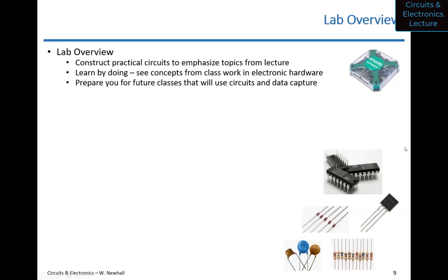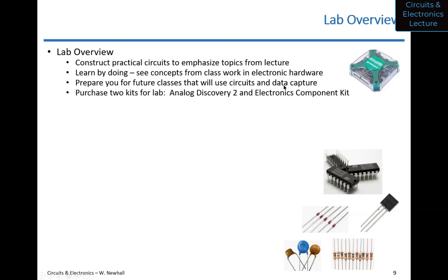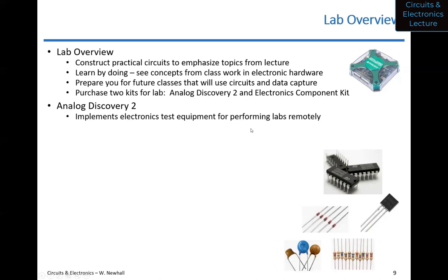For lab equipment at home, you'll purchase two kits from Lab-for-Lab as mentioned in the email. One is a device called the Analog Discovery 2 — this little module implements all the test equipment I have behind me here, and more. You'll also buy an electronics component kit. The Analog Discovery 2 implements electronics test equipment you used to have to go to the ITLL lab to use during certain hours — now you have all of it at home, whenever you want.